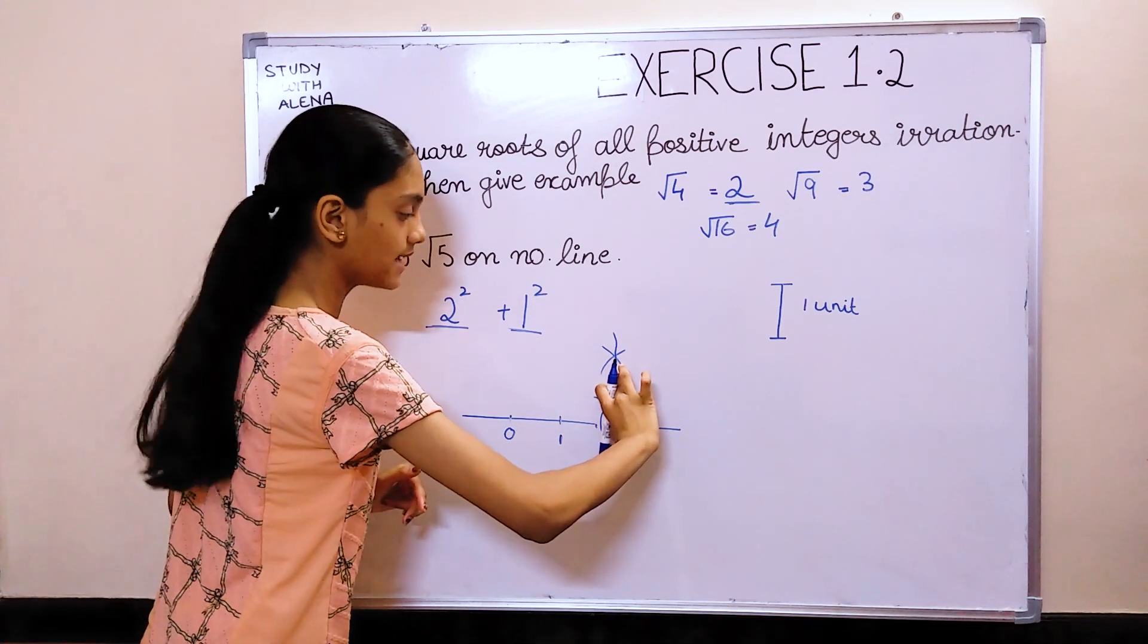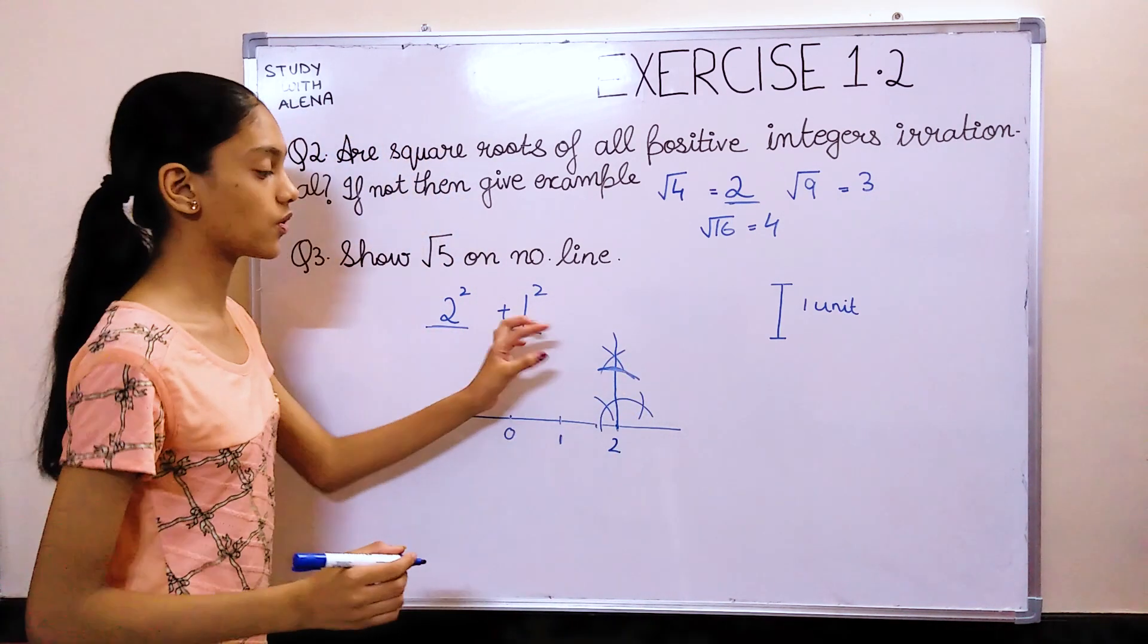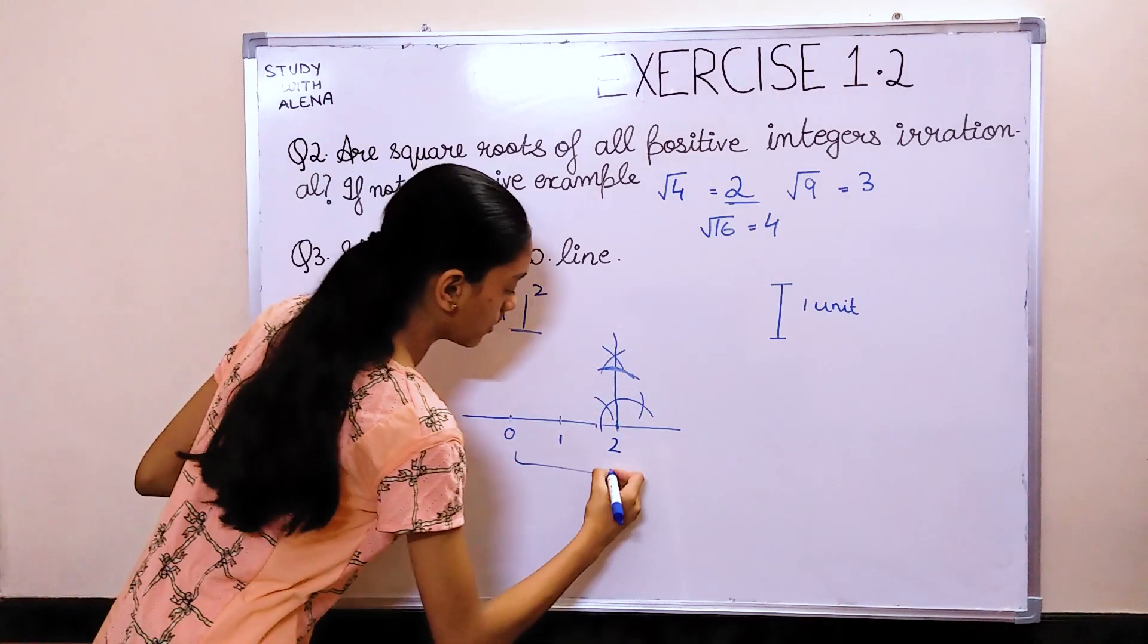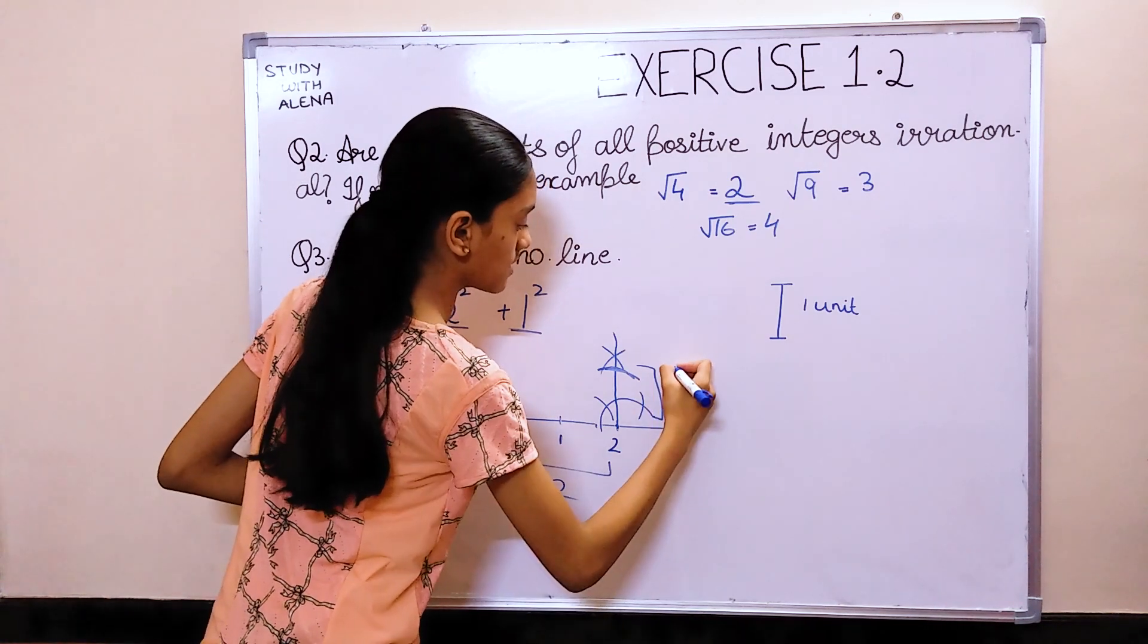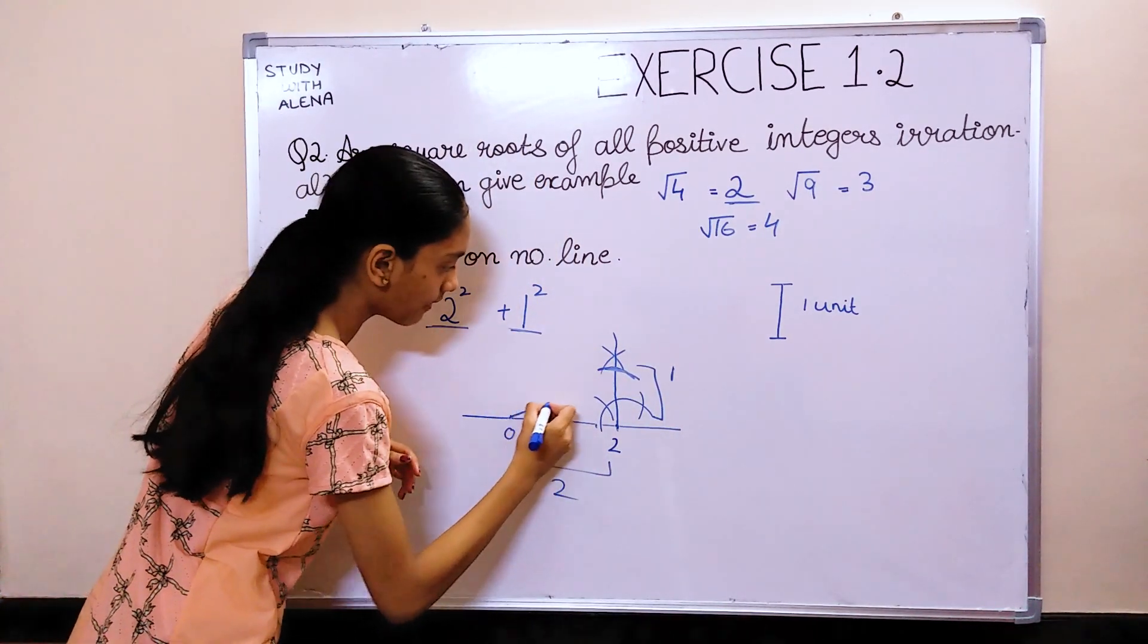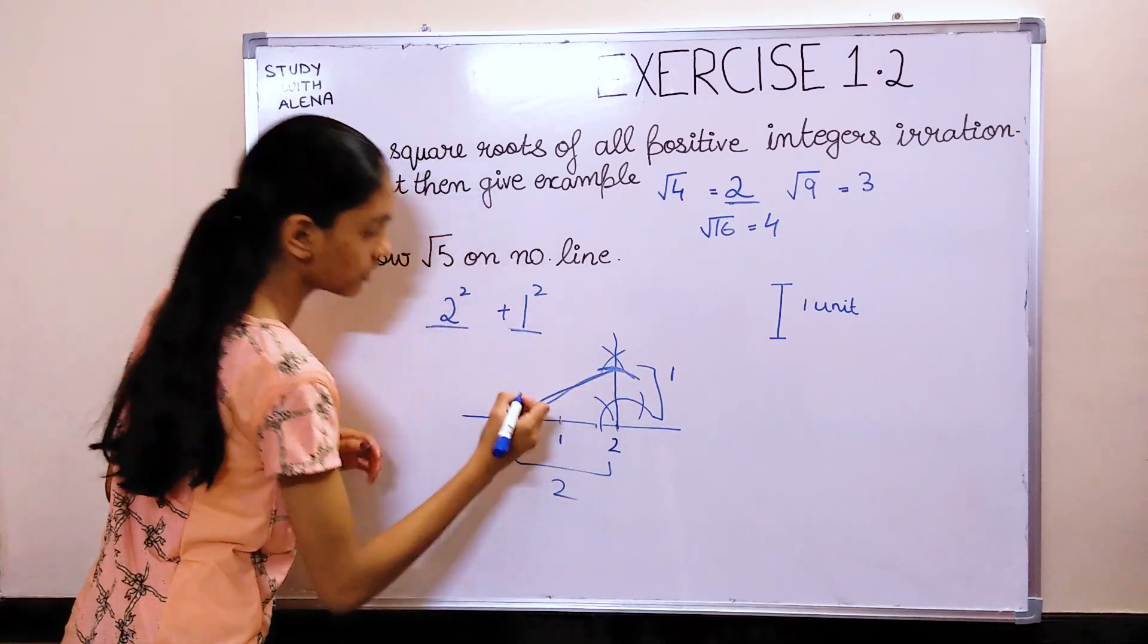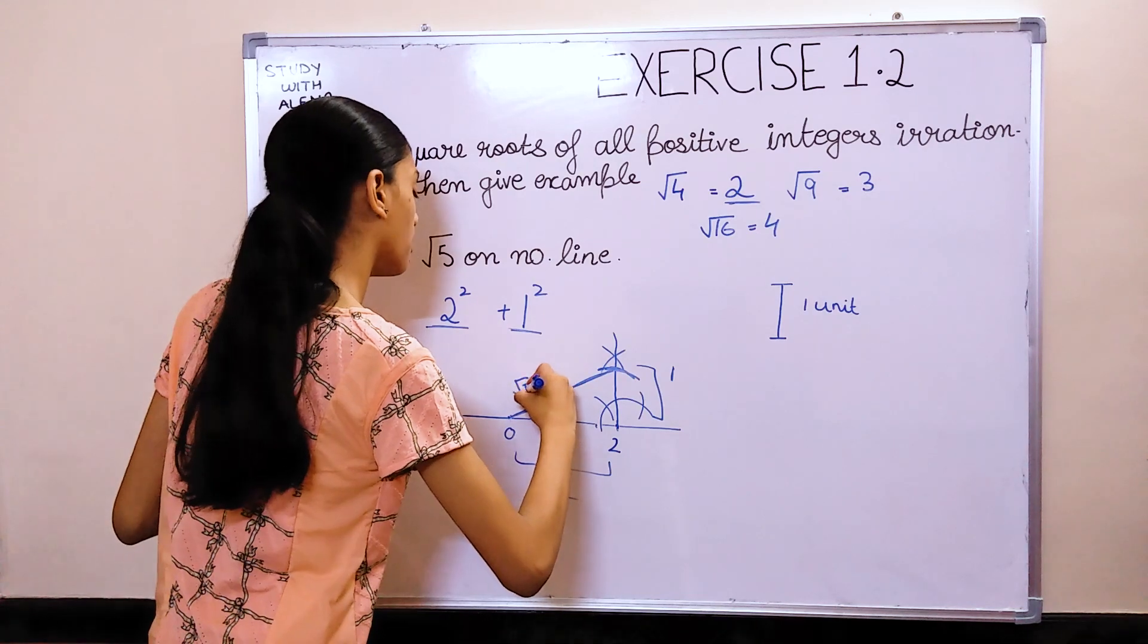Now, I will keep the compass like this. And, using the compass, I will make an arc. So, this is 1 unit. So, this whole was 2. So, this whole was 1. Now, just connect these 2 lines. Make a straight line. And, this would be root 5.